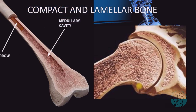Compact bone is dense and is found in the cortex of long bones; it can resist mechanical pressure. Spongy bone has a meshwork of trabeculae with intercommunicating spaces.